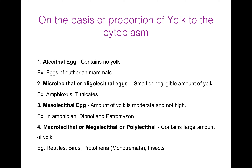First, Alecithal Eggs. The amount of yolk is very, very small or absent in this type of egg. This type of eggs are found in Eutherian mammals. The term Alecithal was given by Gant. Now, Microlecithal or Oligolecithal Eggs. These eggs have a small or negligible amount of yolk. Example is Amphioxus and Tunicates.